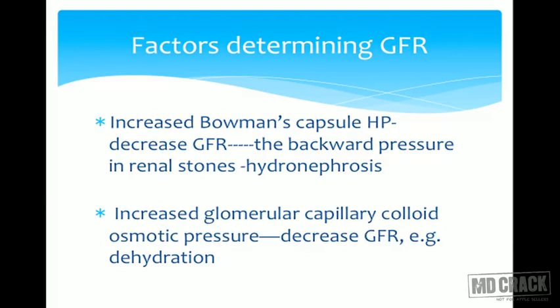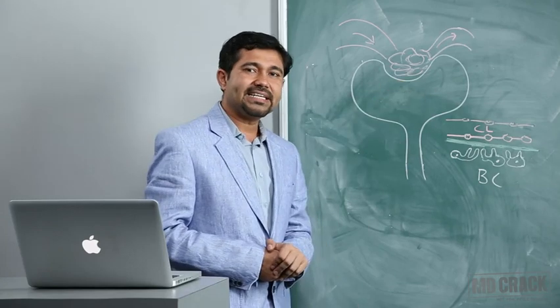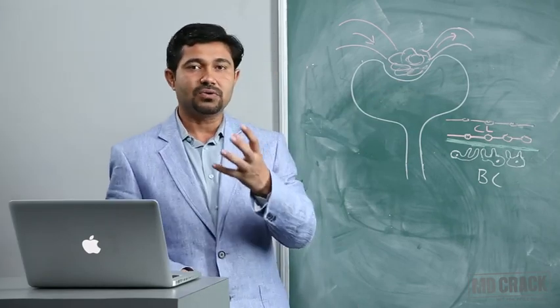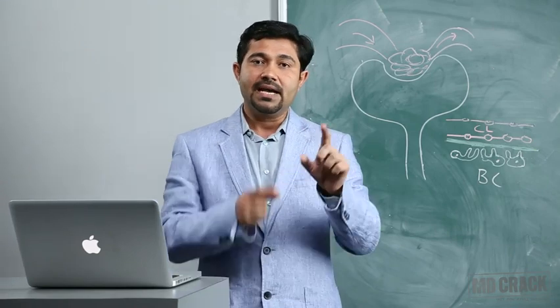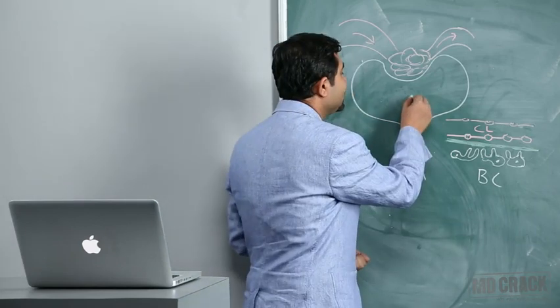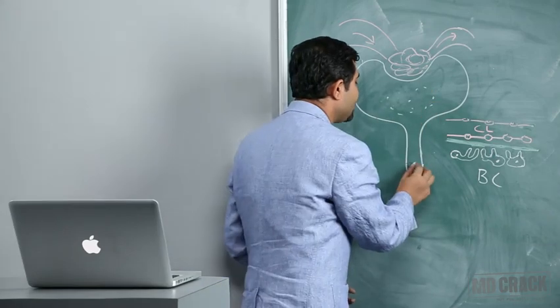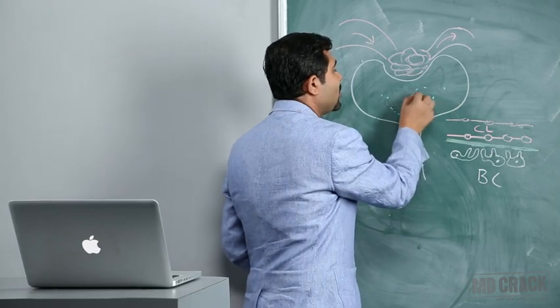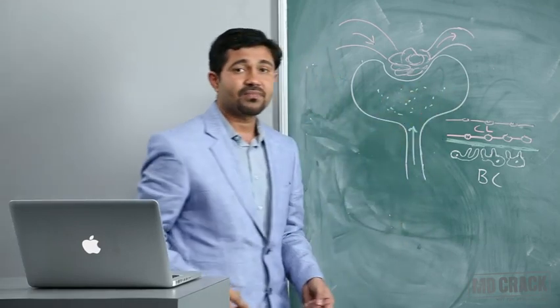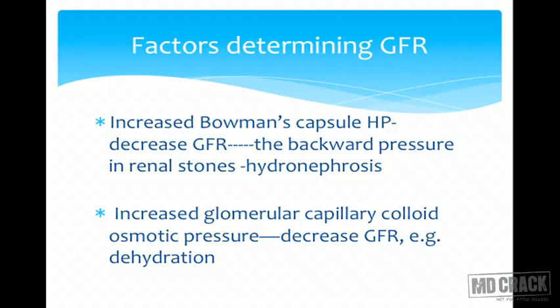Increased Bowman's capsule hydrostatic pressure will decrease GFR. For example, if there is a renal stone blocking the ureter, it will cause backward pressure that travels upstream, increasing the hydrostatic pressure in Bowman's capsule. As a result, less filtrate is formed and GFR decreases.